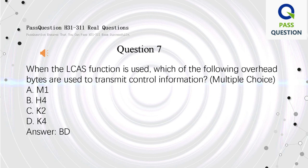Question 7. When the LCAS function is used, which of the following overhead bytes are used to transmit control information? Multiple choice. A. M1. B. H4. C. K2. D. K4. Answer: B, D.